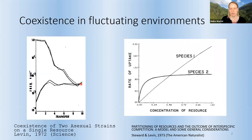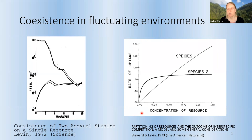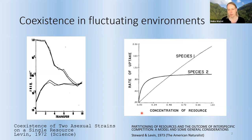One year later, he published together with Fred Steward and they made a simple model: what if one species grows better at low concentrations of the resource and another at high concentrations? Could that explain this coexistence? And they indeed showed with a toy model that they could have coexistence by specialization on resource level.